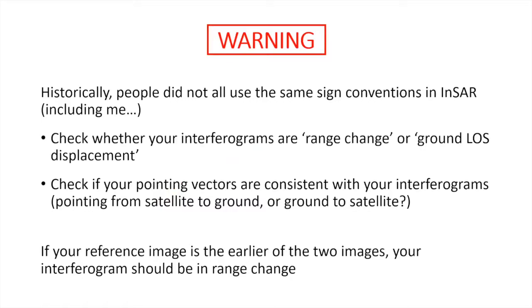A warning: lots of people use their own sign conventions. Some people show their interferograms in range change — distance change between satellite and ground. Others show them in terms of ground displacement or line-of-sight displacement, where movement of the ground upwards is positive, which is the opposite of range change. A positive line-of-sight displacement means the ground is moving towards the satellite. Hopefully when you read papers or studies, this is defined somewhere.